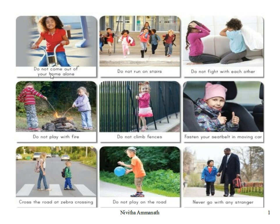What do we see in this picture? Do not come out of your home alone — you should always be under adult supervision. Do not run on the stairs; you may trip and fall down. Do not fight with each other; this is not a good habit. Do not play with fire — you may get burnt. Do not climb fences; you may fall down. Fasten your seat belt in a moving car. Cross the road at zebra crossing. Do not play on the road. Never go with any stranger. These things tell you about good and bad habits to stay safe — they are called safety rules.